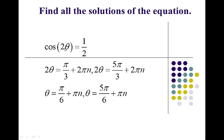We're going to double the angle and then the cosine of that doubled angle will be 1 half. For instance, if you let n be 0, this would produce pi over 6. You put pi over 6 in for theta, you would double it — it would be pi over 3. Cosine of pi over 3 is 1 half. This produces an infinite number of values of theta that make this a true statement. Every time you put theta in, you're going to double it, and then its cosine will be 1 half.